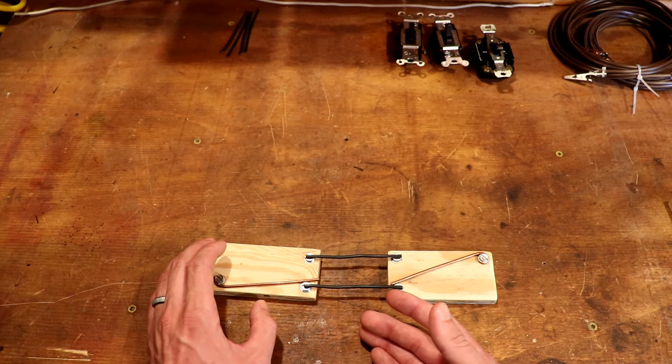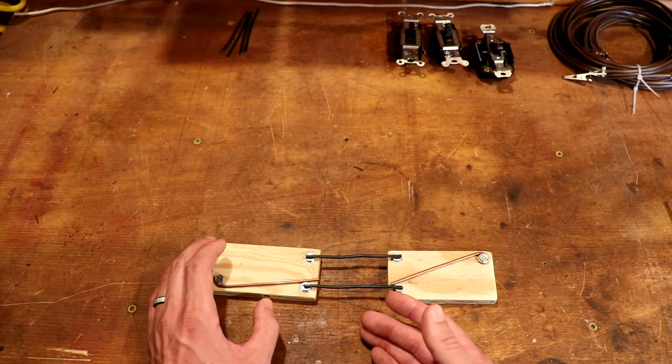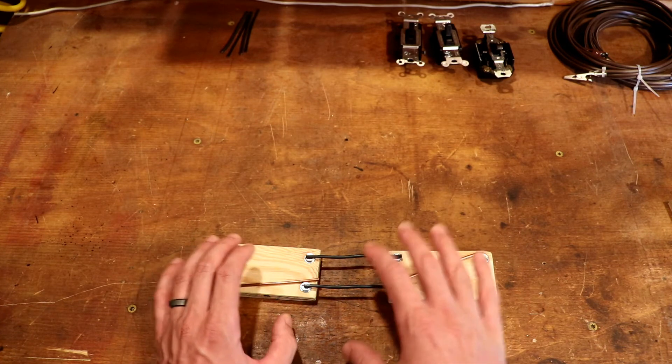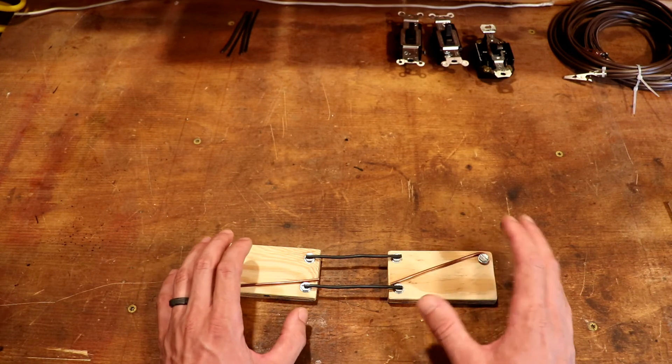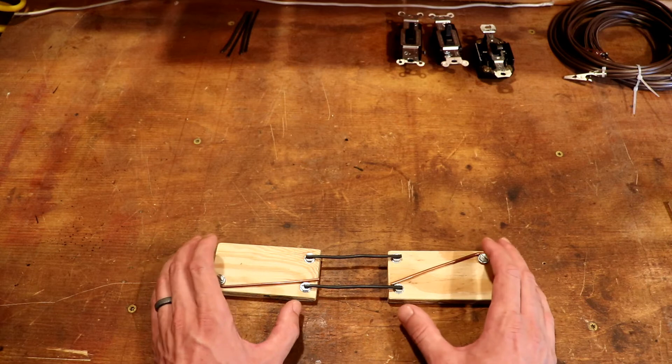Remember, typically white in a residential wiring setting means neutral. But when you dig into these three and four way switches, you can't always rely on the color of the wire to indicate whether it's hot or neutral, it might be a switch leg.